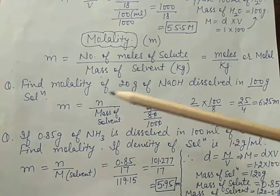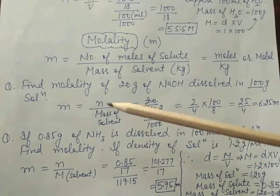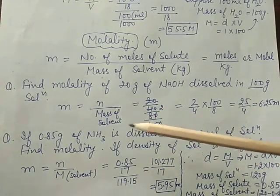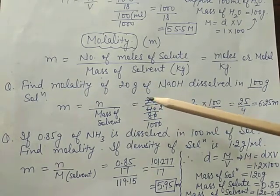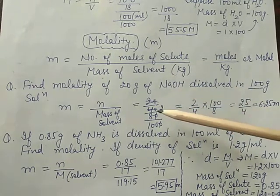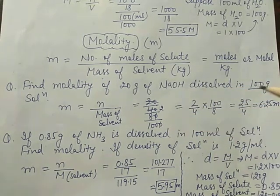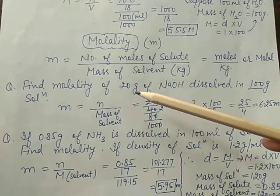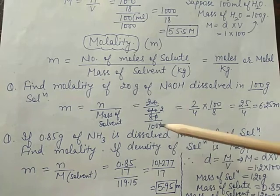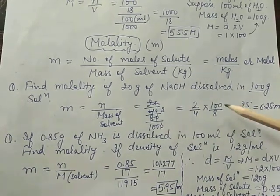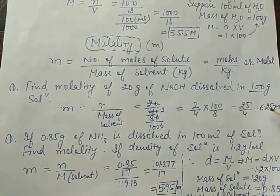Find the molality of 20 gram of NaOH dissolved in 100 gram of solution. Molality = number of moles divided by mass of solvent in kg. Moles of NaOH = 20/40 = 0.5. Mass of solvent: solution mass is 100 g, solute is 20 g, so solvent = 100 − 20 = 80 g = 0.08 kg. Molality = 0.5/0.08 = 6.25 molal.